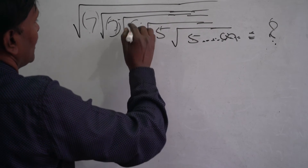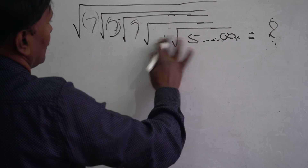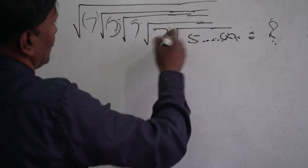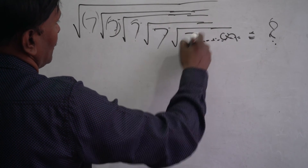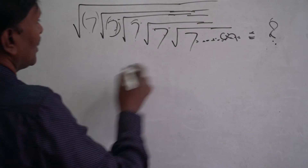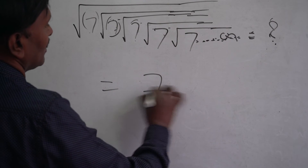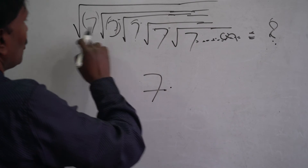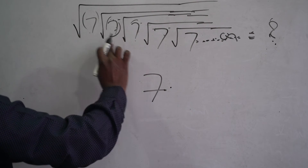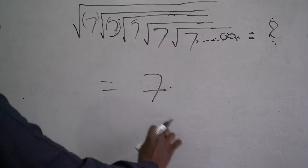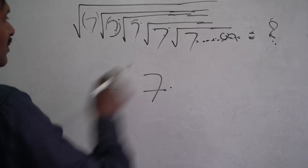If it is 7, what is the output here? 7. No matter whatever the number, the number itself is the answer for this type of problems.